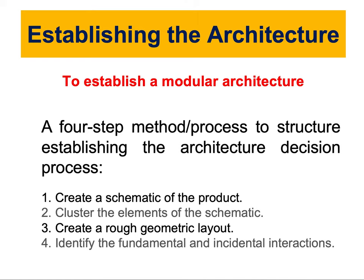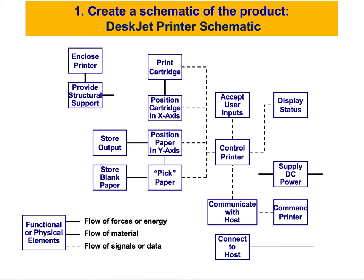We're going to discuss each of these steps one by one and try to apply them to the product your group is developing. Let's start with the first step: creating a schematic of the product. A schematic is a diagram representing the team's understanding of the constituent elements of the product — how the team perceives their product — and this is a general layout. To do this, you can find many different elements of your product to put in a schematic representation.